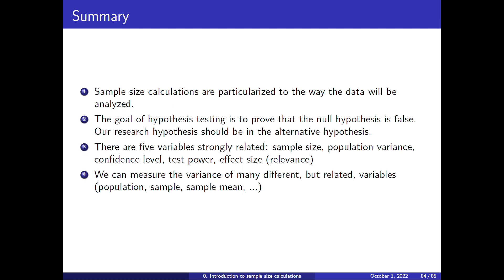As a summary: sample size calculations are particular to the way the data will be analyzed — if you don't know the analysis method, you cannot calculate the sample size. The goal of hypothesis testing is to prove the null hypothesis is false; we can never accept the null. There are five strongly related variables: sample size, population variance, confidence level, test power, and effect size — given four, the fifth can be calculated. We must distinguish between population variance, sample variance, and variance of the sample mean; they are related but not the same.